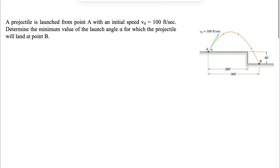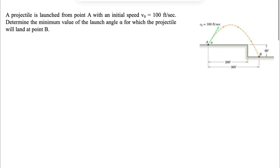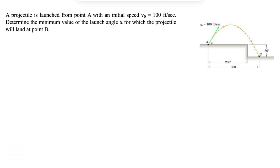We're going to be solving a question from the second chapter of the Meriam textbook, Dynamics. We have a projectile that is launched from point A with an initial speed of 100 feet per second. We need to determine the minimum value of the launch angle alpha at which the projectile will land at point B.